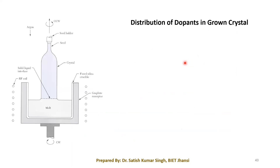So our next topic for today's discussion is the crystal growth of single silicon crystal. When we did this discussion, I told you that generally we have a certain type of substrate — either p-doped or n-doped. So how do we get such a substrate that is p-doped or n-doped?